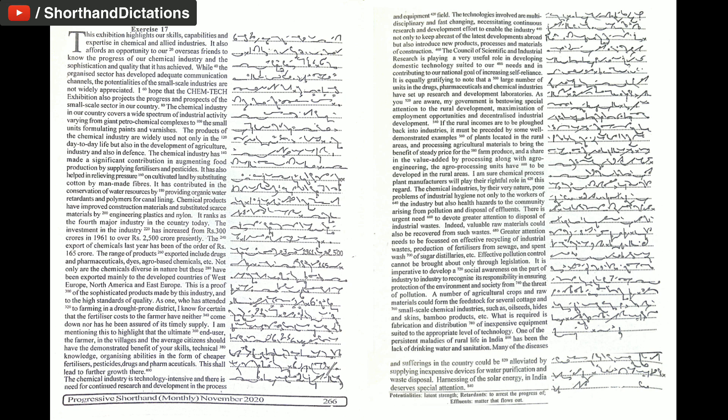It has also helped in relieving pressure on cultivated land by substituting cotton by man-made fibers. It has contributed in the conservation of water resources by providing organic water retardants and polymers for canal lining. Chemical products have improved construction materials and substituted scarce materials by engineering plastics and nylon. It ranks as the fourth major industry in the country today.